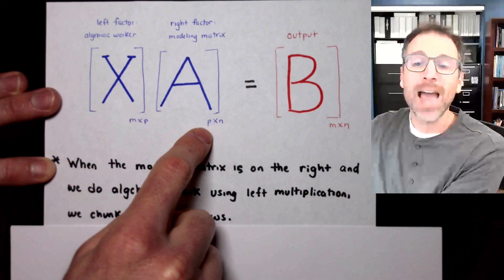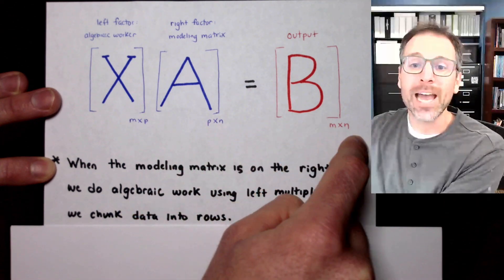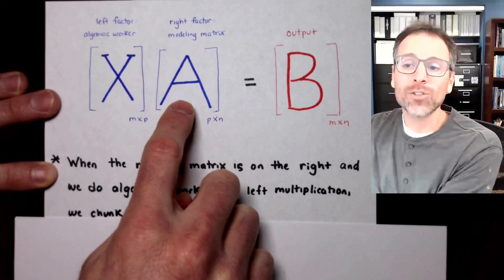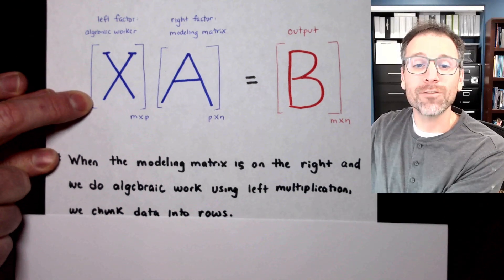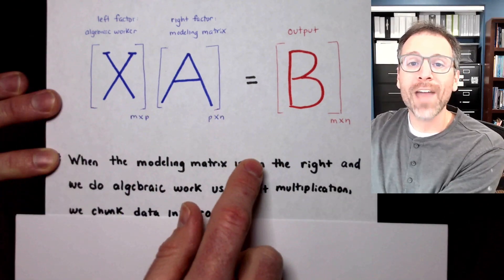Here, X is M by P, A is P by N, and B would be M by N. We say that when the modeling matrix X is on the right, and we do algebraic work using left multiplication, we chunk all data into rows.